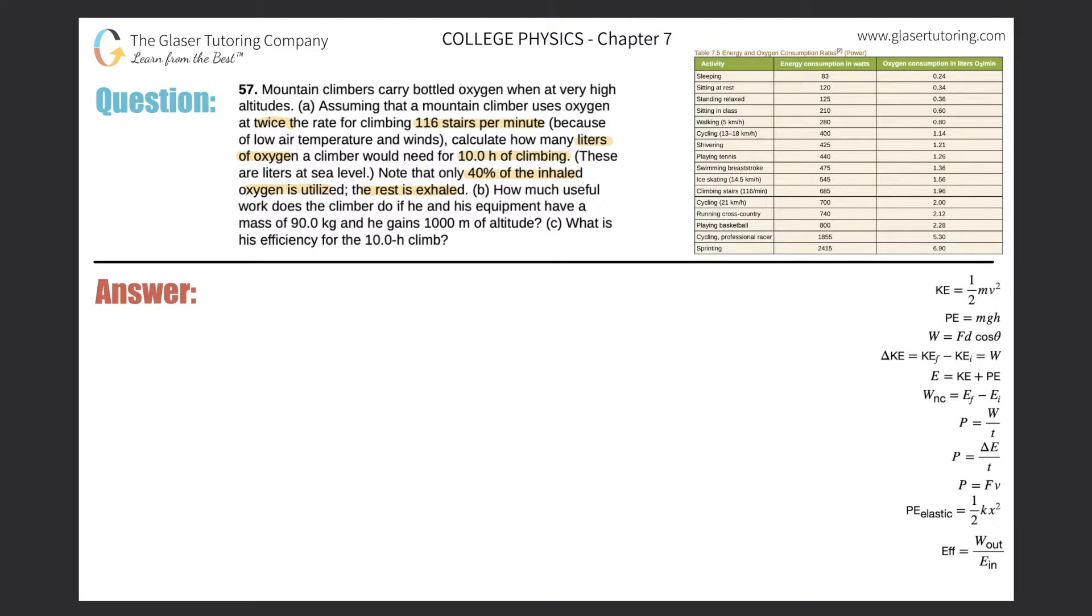First thing is, they say that a mountain climber is using oxygen at twice the rate for climbing 116 stairs per minute. So let's find the 116 stairs per minute in terms of climbing. Here it is: 116 stairs per minute has a power of 685 watts and the liters of O2 consumption per minute is 1.96. We're just going to take that and multiply it by two.